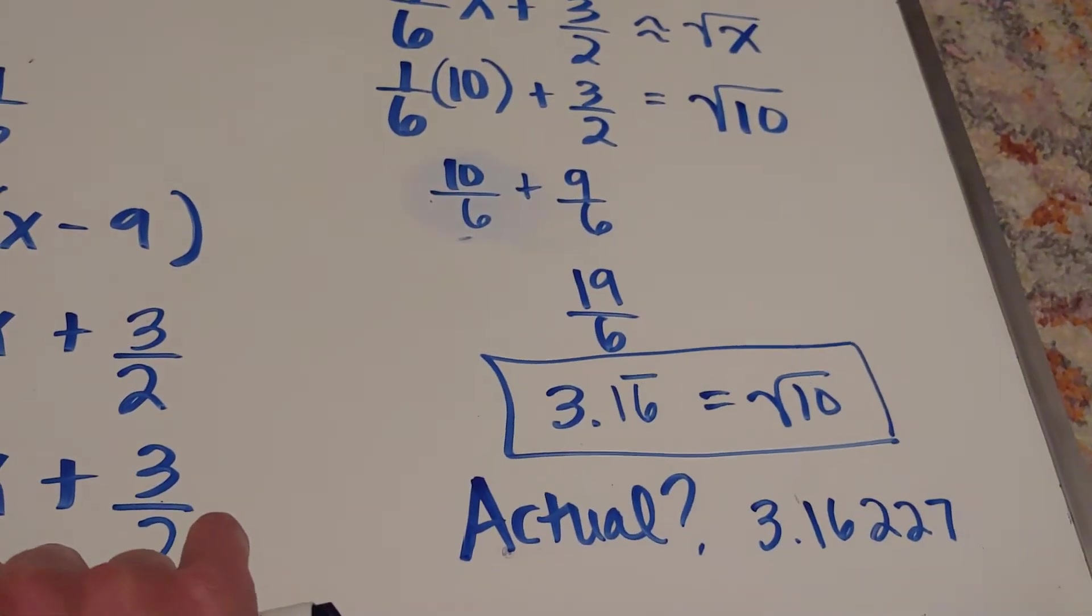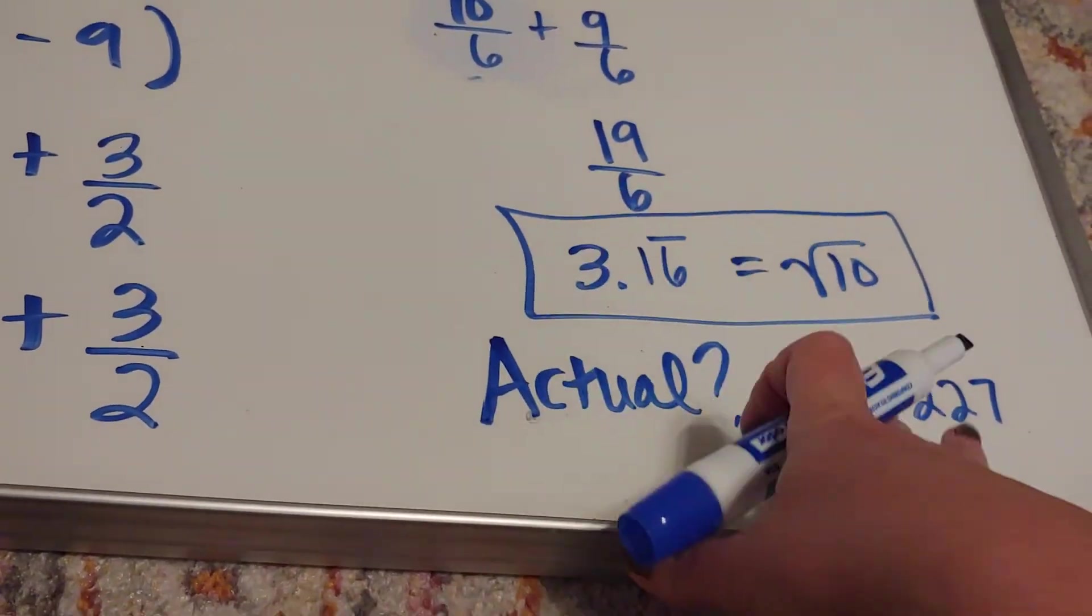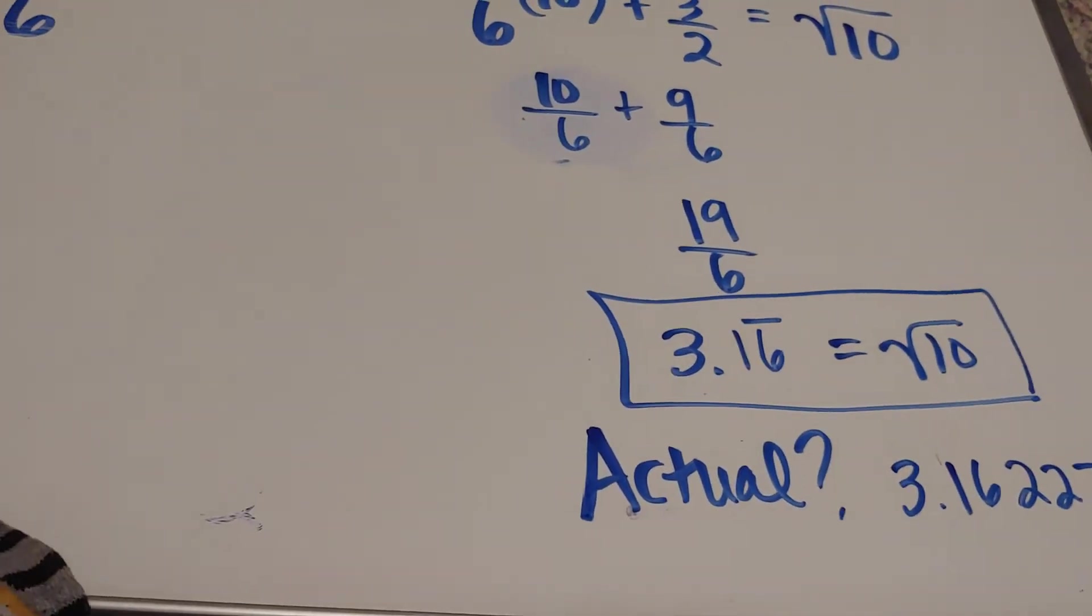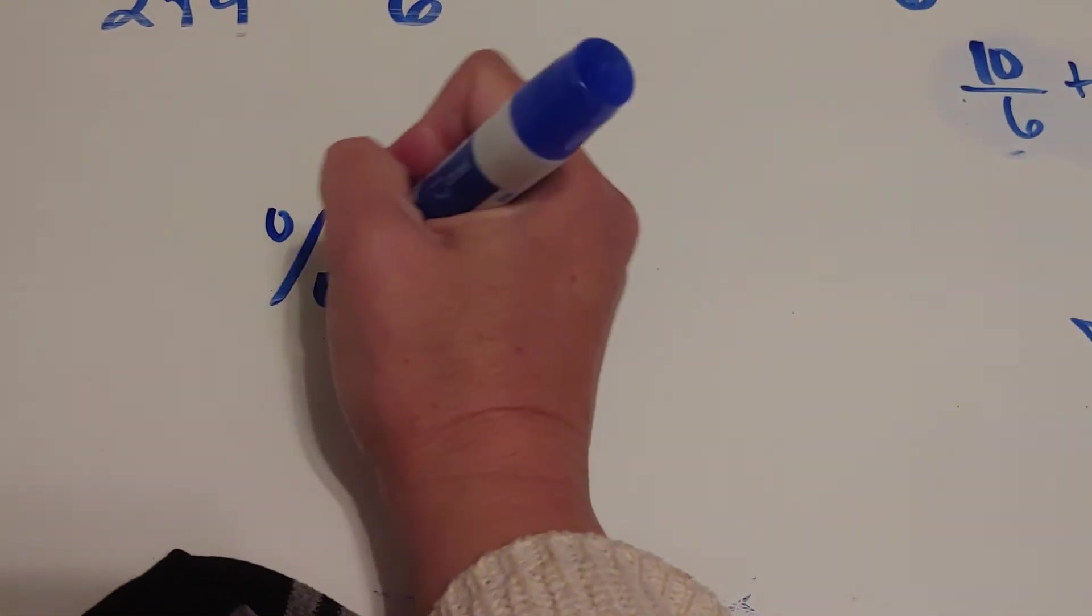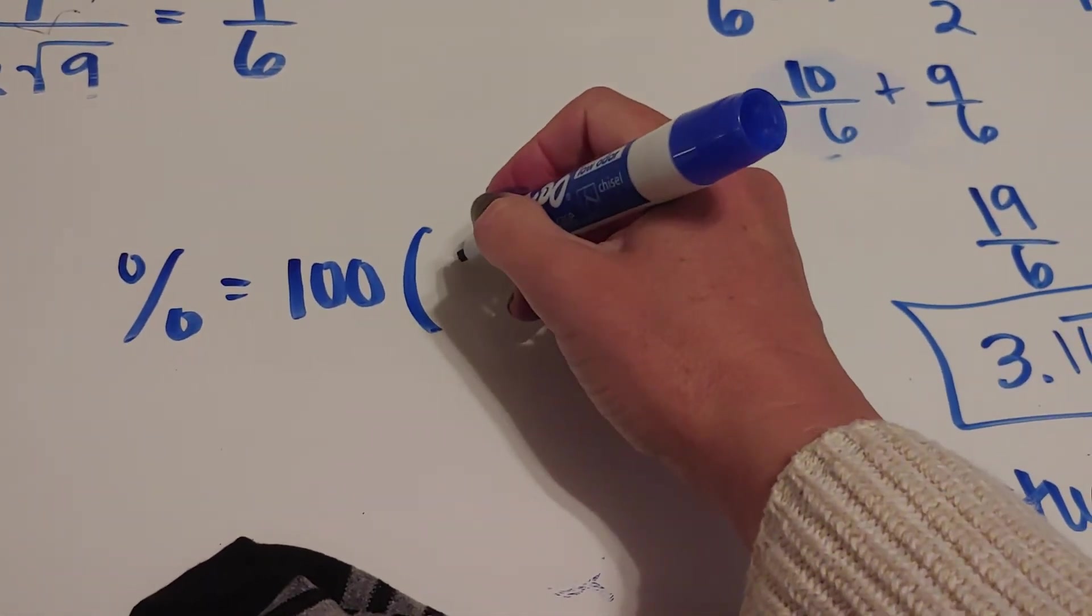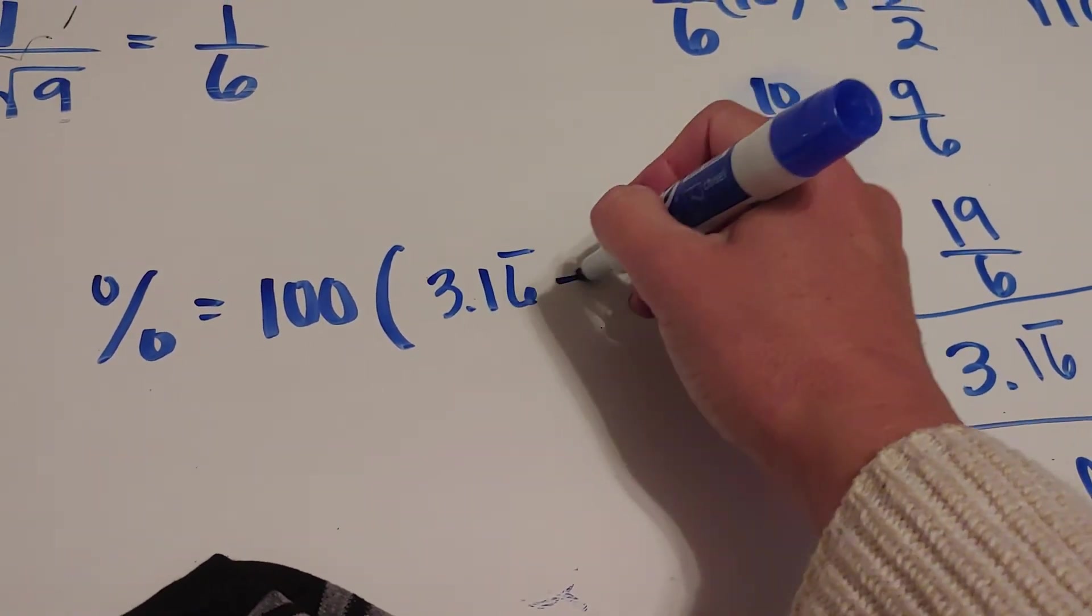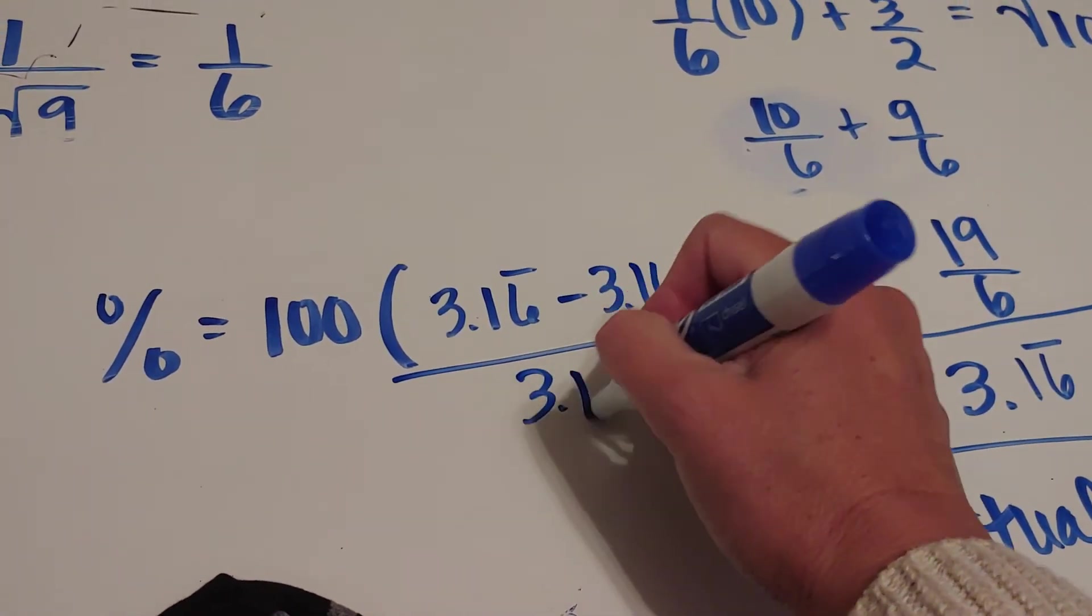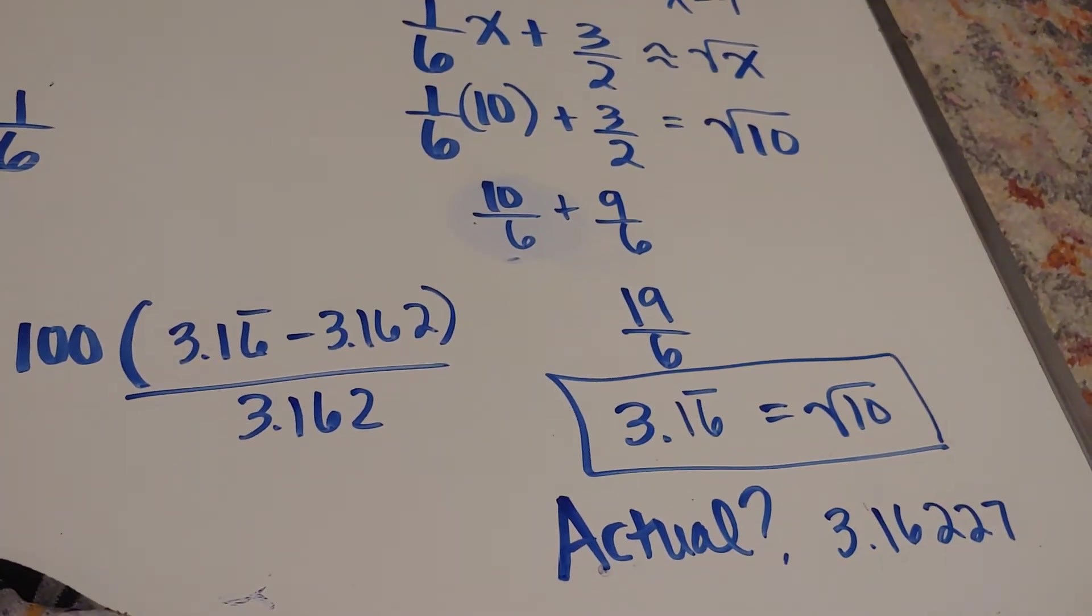Now in your homework, it'll ask you to figure out the percent error. So that's basically saying how close these are to each other. If you want to know the percent error, it is 100 times your estimate, so the 3.16 repeating minus the actual divided by the actual. And what you're going to see is that this is ridiculously close. Like we are on it.